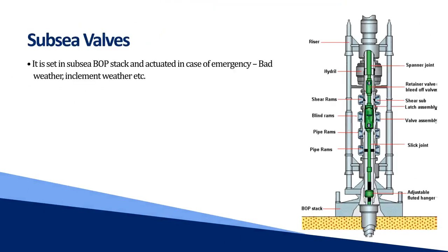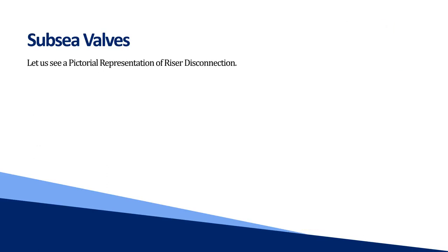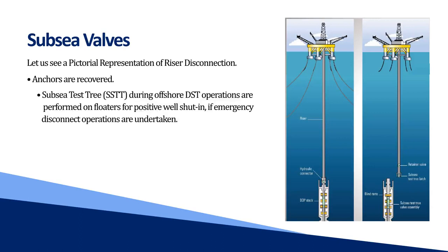Subsea valves: set in the subsea BOP stack and actuated in case of emergency, bad weather, or inclement weather. The entire tool is annulus pressure operated. A sequencing interlock system between the valves allows only one valve to be open at a time, reducing operating times and minimizing the chance for operational error. Simple pressure sequences let you select which valve opens after closing both valves, allowing flexibility in the planned number of flow and shut-in periods. The subsea test tree (SSTT) is used during offshore DST operations performed on floaters for positive well shut-in if emergency disconnect operations are undertaken.